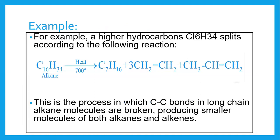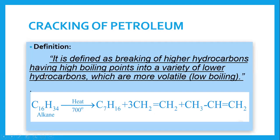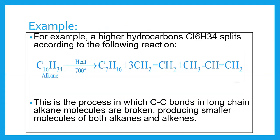For example, here we have C16H34, which is written in your book as an alkane. But the name of this compound is Hexadecane. When you heat Hexadecane to 700 degrees Celsius, this compound is converted into Heptane, which is C7H16.